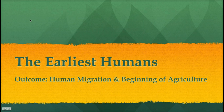We're going to kick off our first unit today called the Earliest Humans. Really, what we want to try to do in this unit is try to figure out what were early humans like, what did they do, where did they go. And so, in this specific lecture, we're going to focus on human migration and the beginning of agriculture.